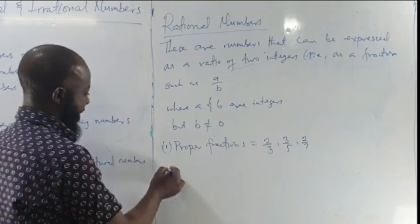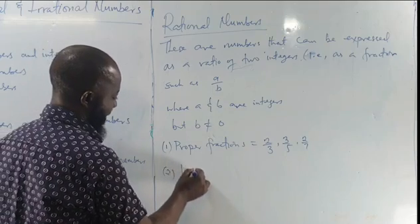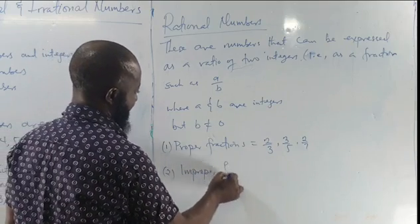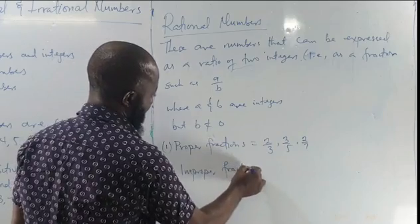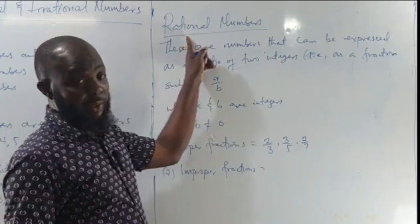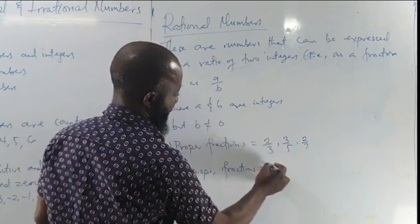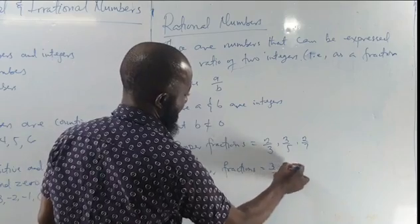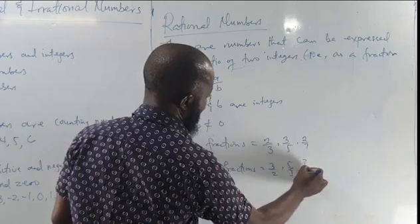The second example is improper fractions. Improper fractions are also rational numbers. So we have 3 over 2, 5 over 3, 7 over 2.